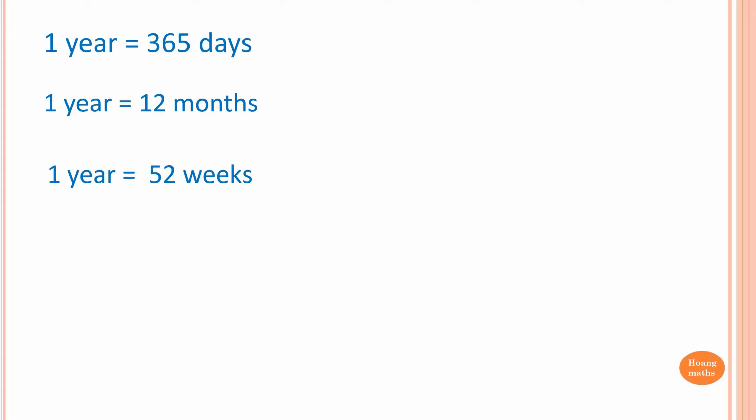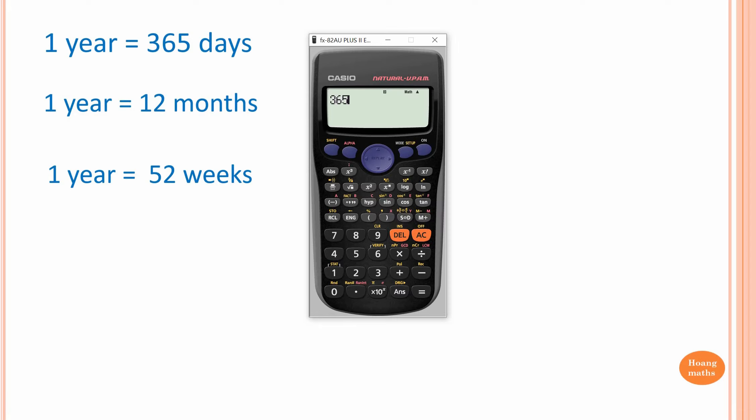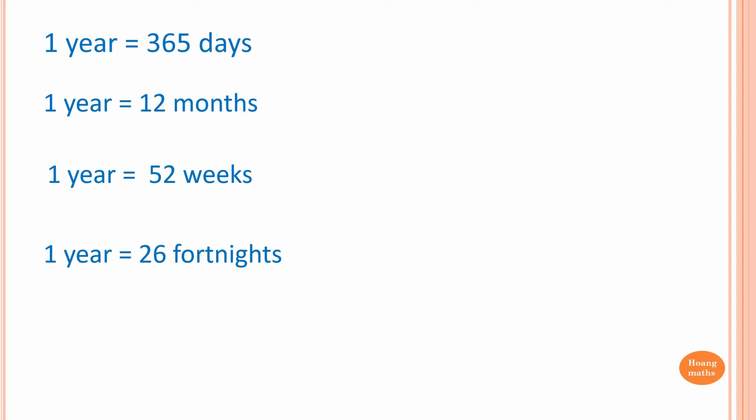One year is equal to 52 weeks, but technically is 52.18 weeks. If you think about it, we have 365 days in a year, and then we want to work out how many weeks in a year. So one week is seven days, so we just divide by seven. There you go. So technically we have 52.14 weeks, but to make it easier, we just make it one year equal to 52 weeks. And one year is equal to 26 fortnights.